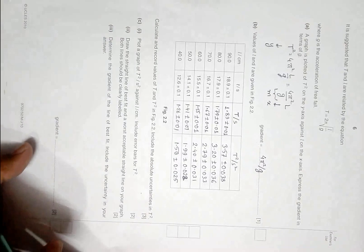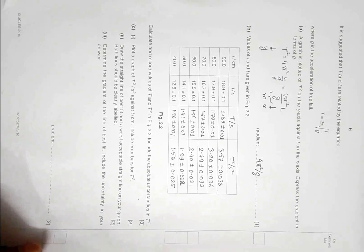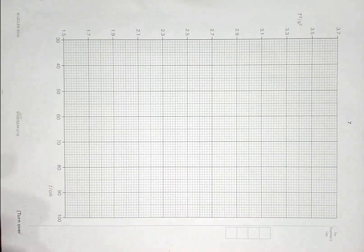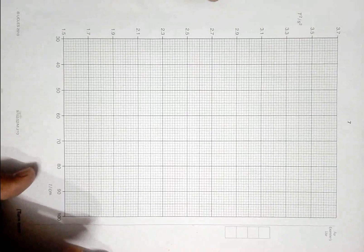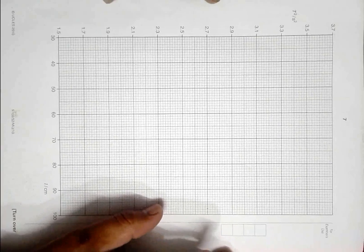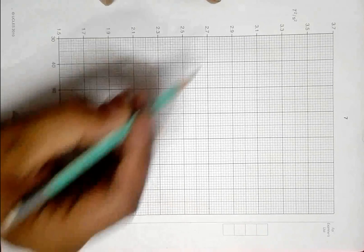This is the graph page. It has L in the x-axis which is in centimeters, and we have T square in the y-axis which is in seconds squared. So let's go for plotting.